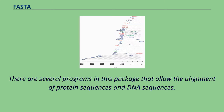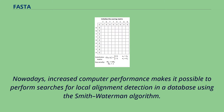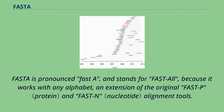There are several programs in this package that allow the alignment of protein sequences and DNA sequences. Nowadays, increased computer performance makes it possible to perform searches for local alignment detection in a database using the Smith-Waterman algorithm. FASTA is pronounced FAST-A and stands for FAST-ALL because it works with any alphabet, an extension of the original FAST-P and FAST-N alignment tools.